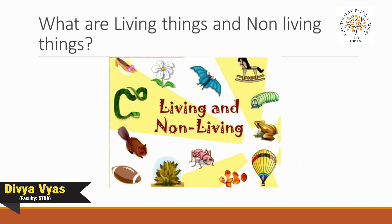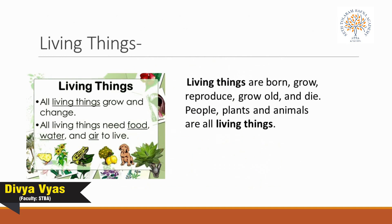Do you know what is a living thing and what is a non-living thing? Living things are born, grow, reproduce, grow old, and die. People, plants, and animals are all living things. Living things need air, water, food, and shelter to survive.